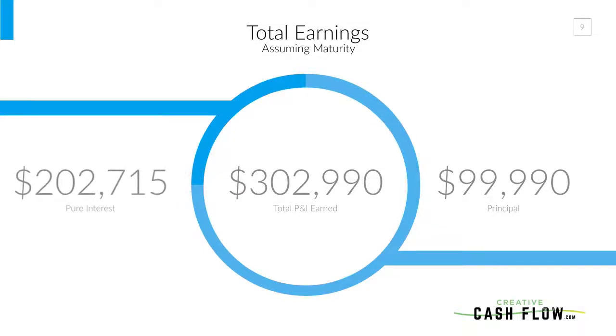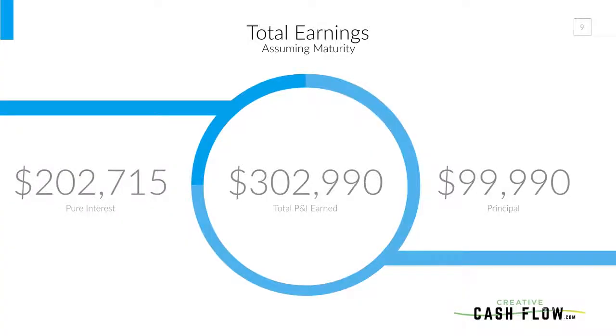Your total principal and interest earned is going to be $303,000 over those 30 years — granted, this assumes maturity, meaning the loan goes the full 30 years. That's not terribly uncommon — people who do owner-financed loans are a little different than those who do typical conventional mortgages. We just took an asset that was only worth $100,000 and made $303,000 on it, just by knowing how the power of interest works and how to use that calculator. It's really, really powerful.